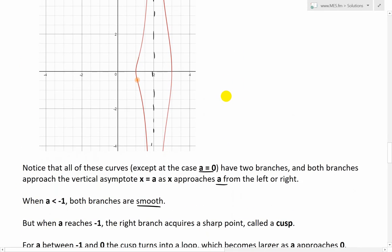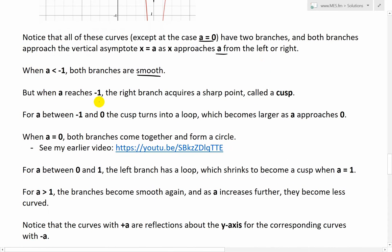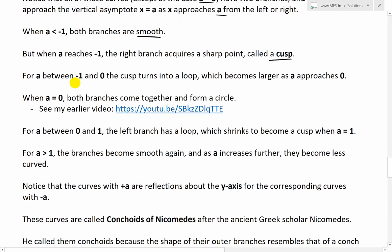And also when you have it on the other side, when a is greater than 1, you have it smooth like this. But when a reaches negative 1, the right branch acquires a sharp point, and this is called a cusp. For a between negative 1 and 0, the cusp turns into a loop, which becomes larger as a approaches 0. But when a equals to 0, both branches come together and form a circle.